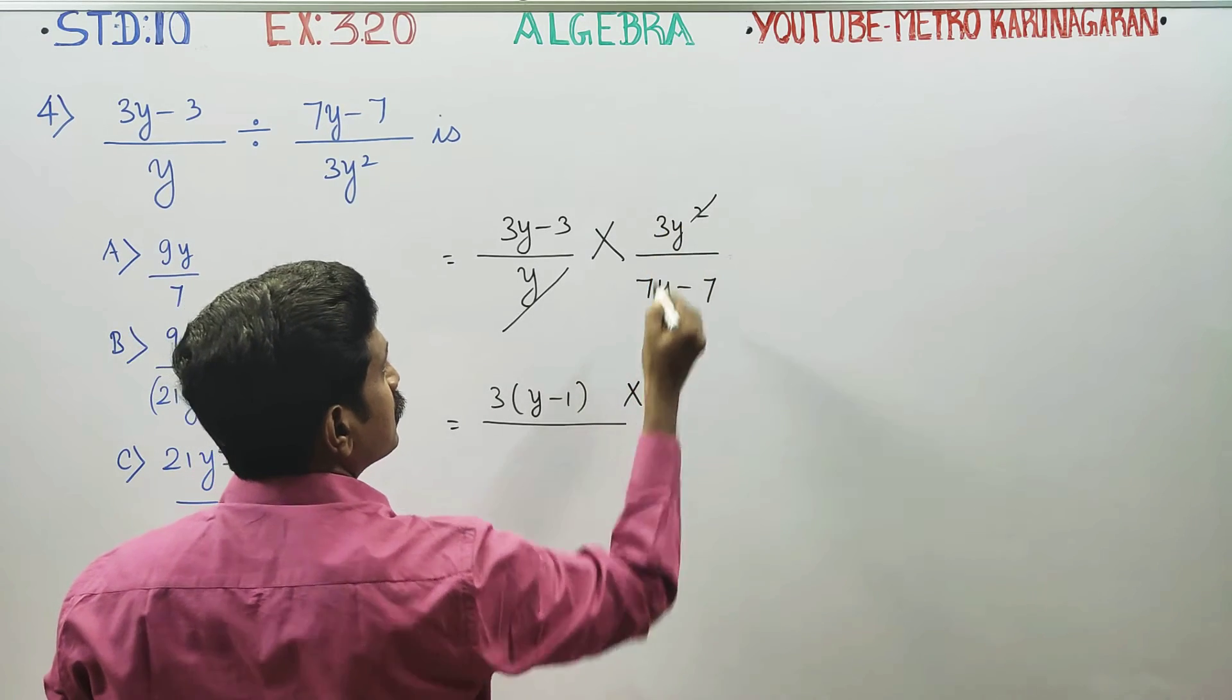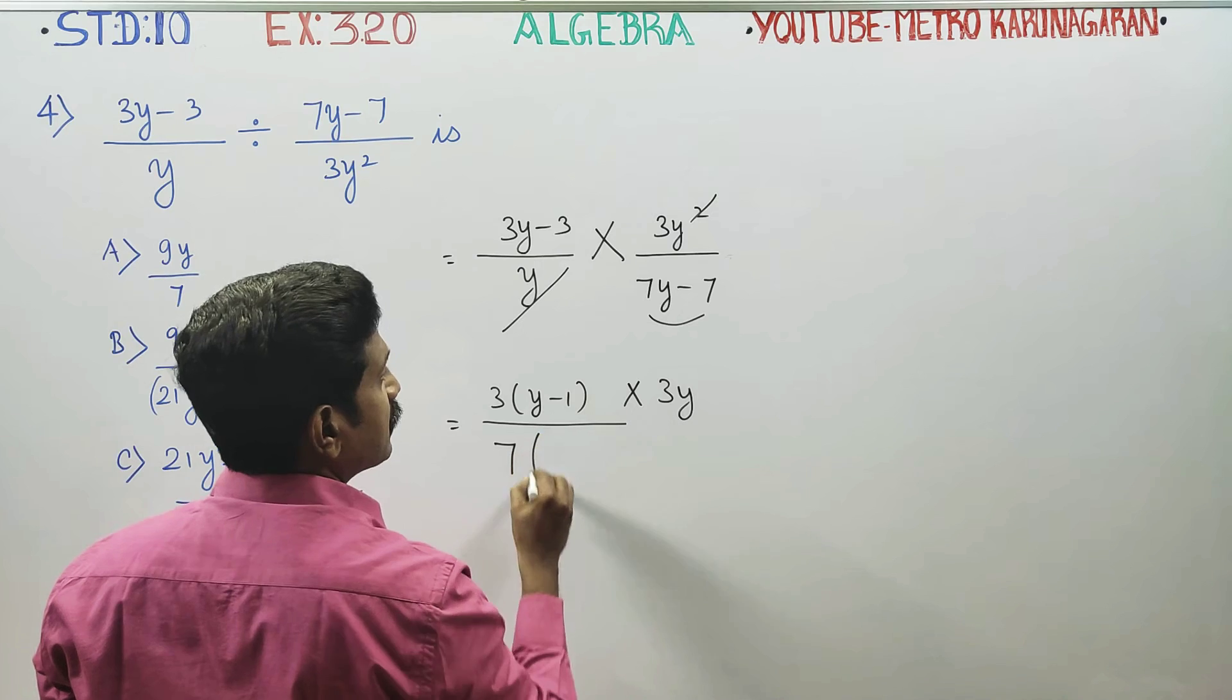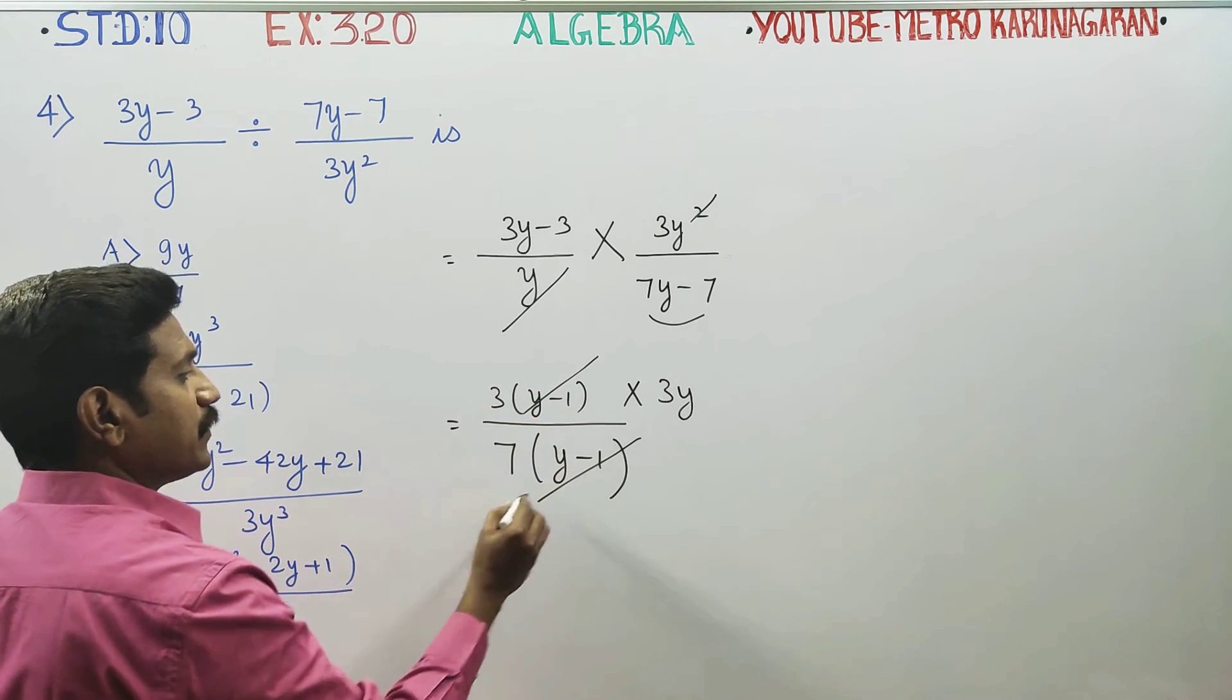This will be 3y. If you have 7 taken common, it will be y minus 1. Y minus 1, y minus 1 will cancel.